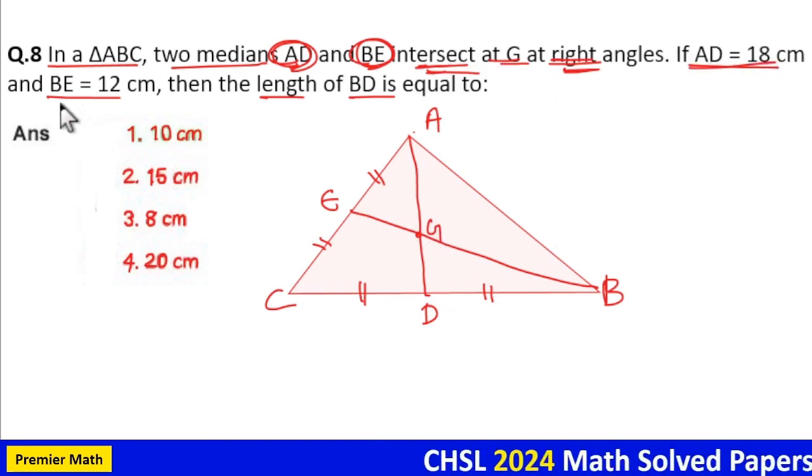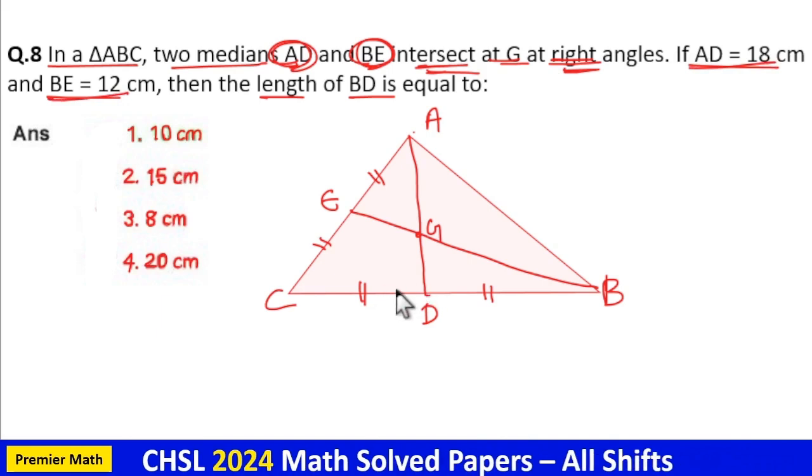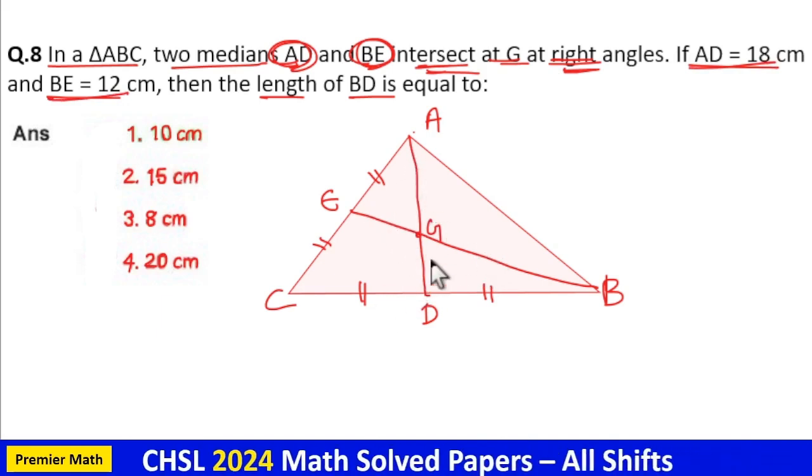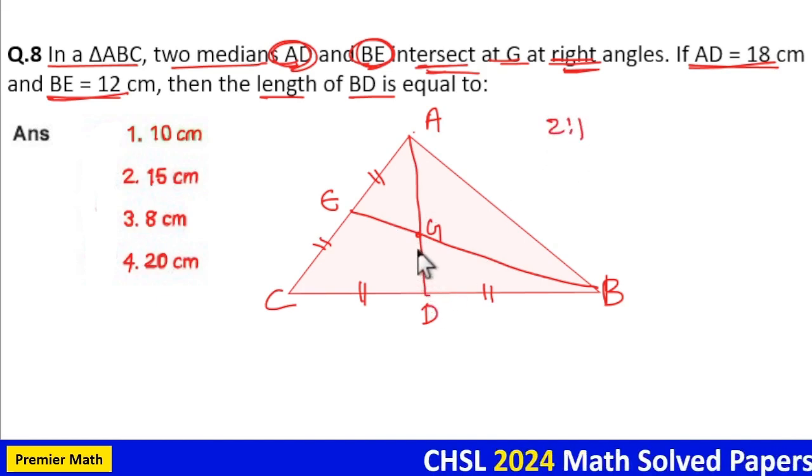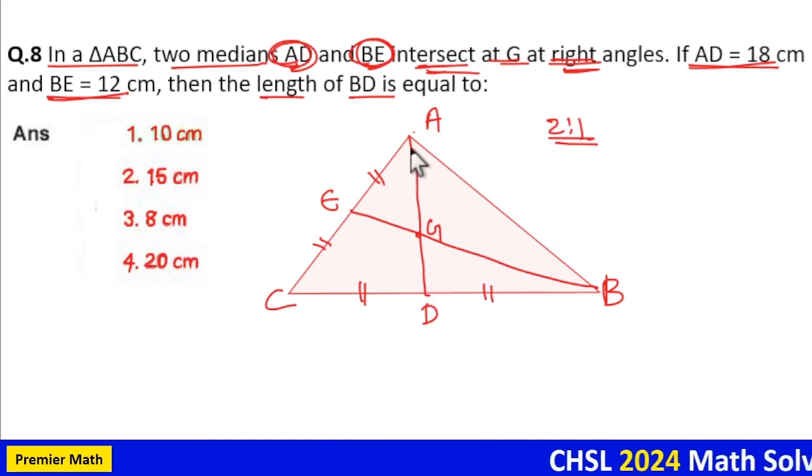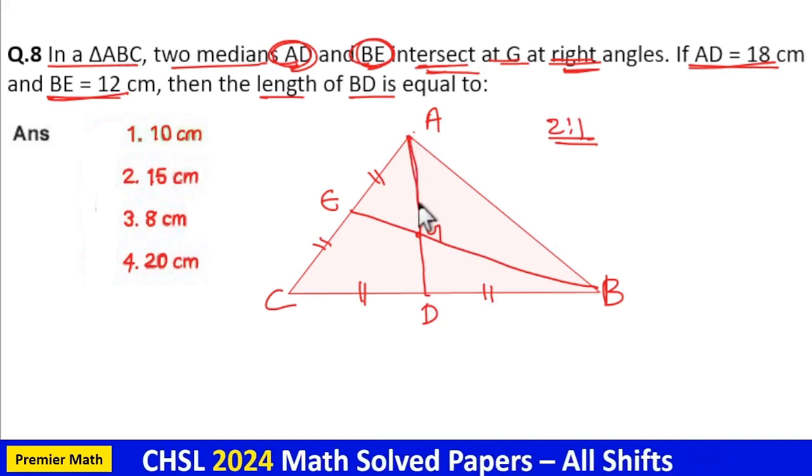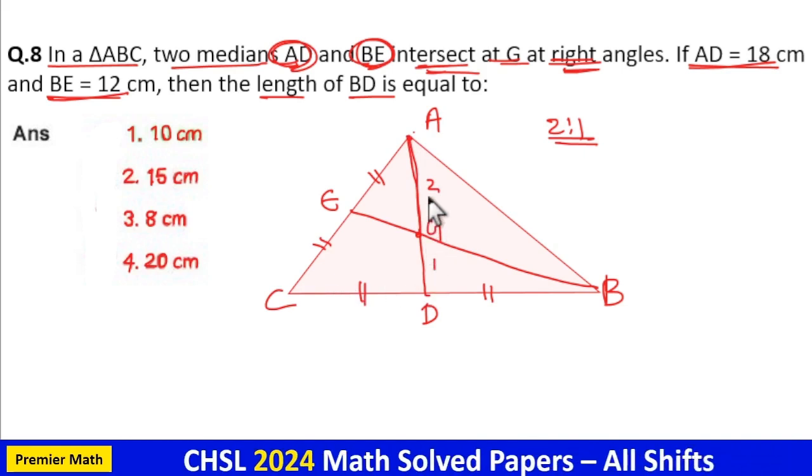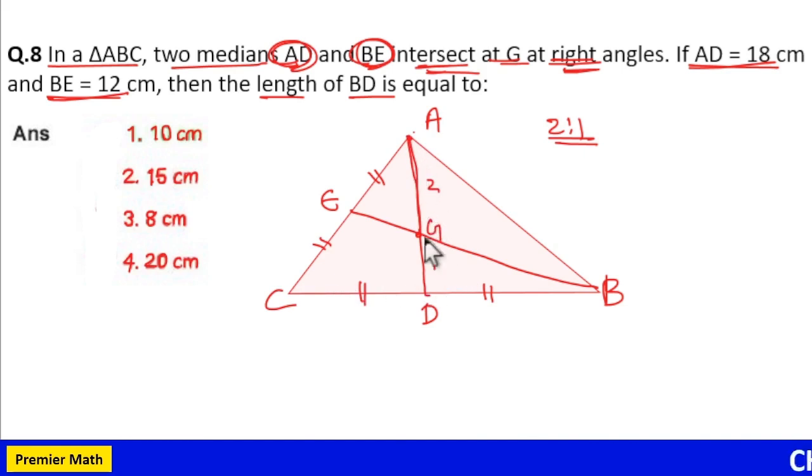AD is 18 cm and BE is 12 cm. Before that, always remember medians bisect at 2 is to 1 ratio. This length is 2 parts and this length is 1 part. So 2 plus 1, 3 parts is AD.